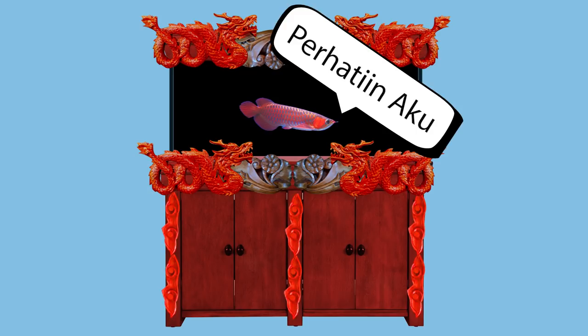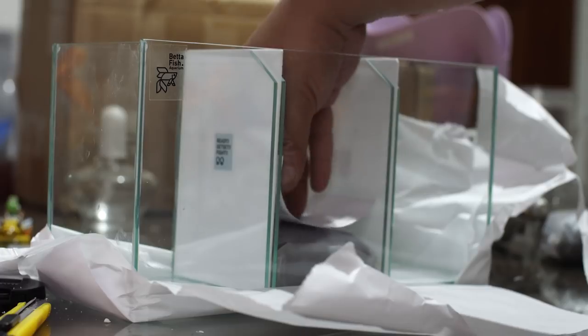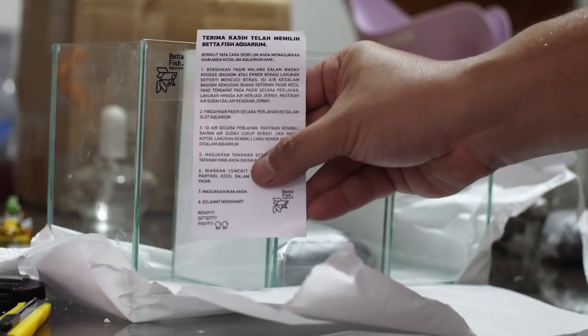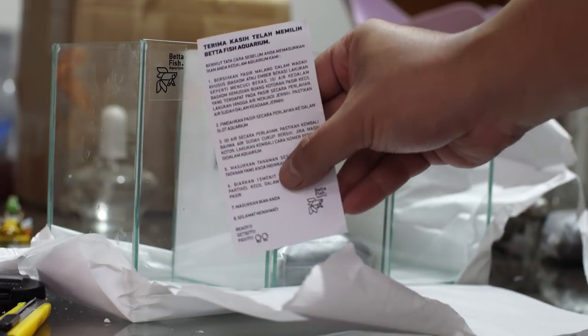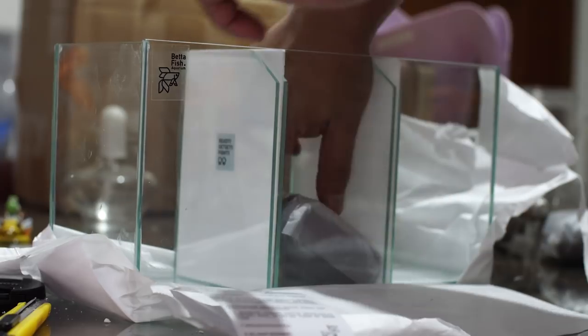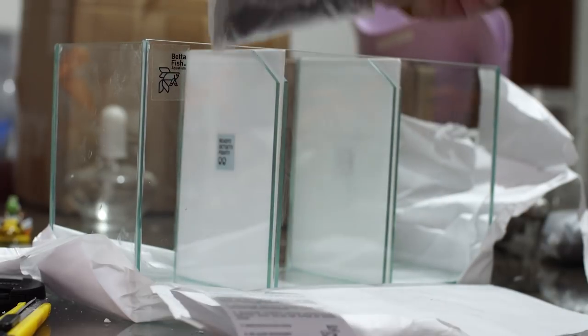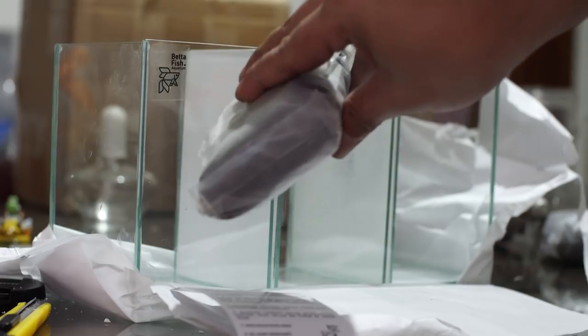Kalian kebayang ya, itu yang menjadi perhatian itu adalah si aquarium itu yang segi enam itu, yang lebay itu. Dan beserta si meja dan tutup aquariumnya. Mata kita tuh jadi terfokus pada itu, bukan pada ikannya. Si aquarium itu tidak boleh mencuri perhatian kita dari apa yang mau kita sajikan sebenarnya, yaitu ikan. Dan Betta Fish Aquarium disini gue nilai sangat berhasil dalam melakukan itu.